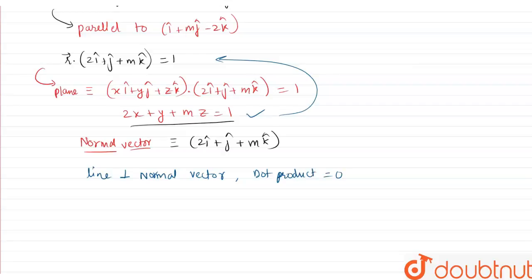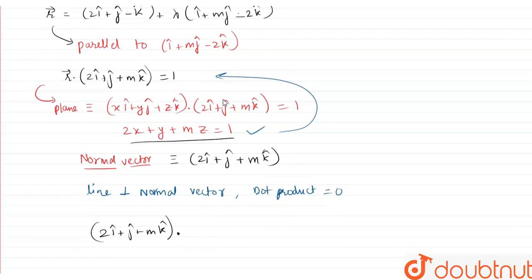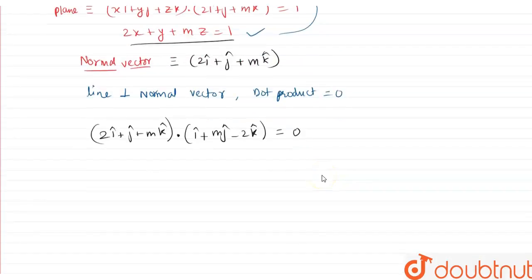So we can write that the normal vector (2i cap plus j cap plus m k cap) dotted with the direction vector of the line (i cap plus m j cap minus 2k cap) equals 0. Taking the dot product: 2 plus m minus 2m equals 0, which gives m equals 2.